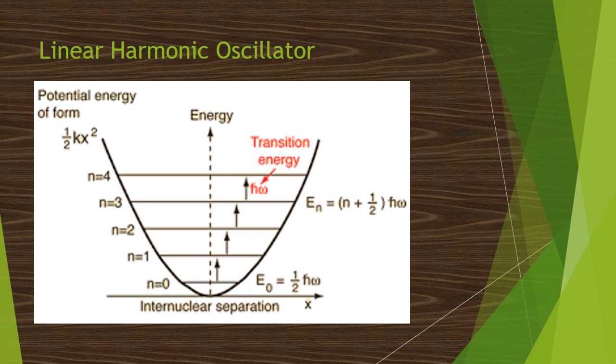Let me substitute the values of 1, 2, 3. For n equal to 1, En is equal to E1. So E1 is equal to 1 plus 1 by 2, which is equal to 3 by 2 h cross omega. And for n equal to 2, we can get E2 is equal to 5 by 2 h cross omega. And at n equal to 4, 7 by 2 into h cross omega. So the lowest energy value is called zero point energy.